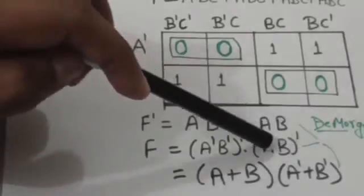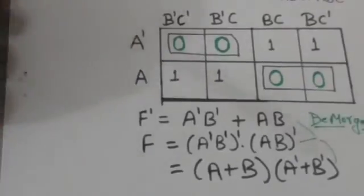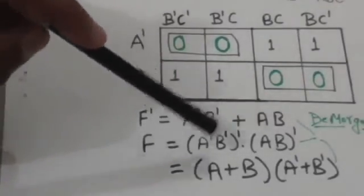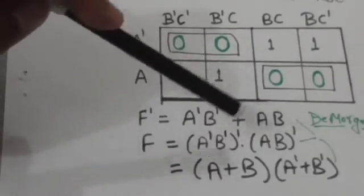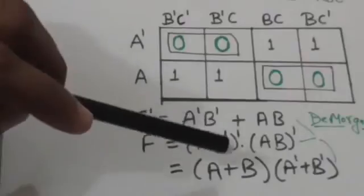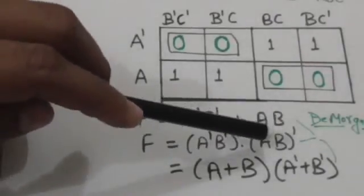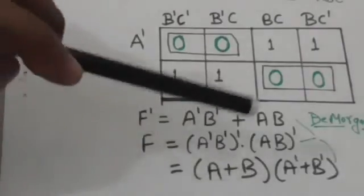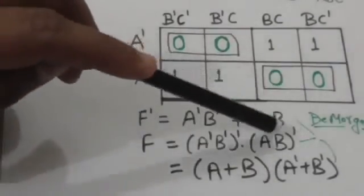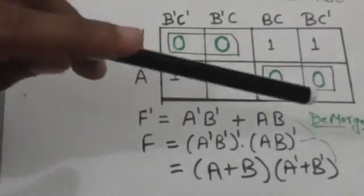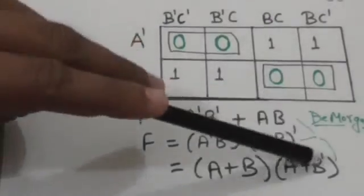We will use De Morgan's theorem again. The complement of a-not and b-not will become the complement of a-complement plus the complement of b-complement, that is a plus b. And the complement of a and b would become a-complement plus b-complement.